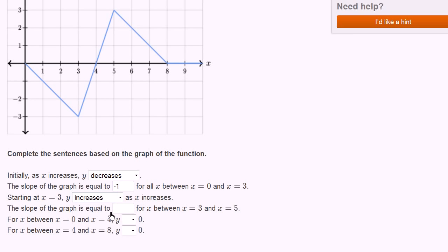The slope of the graph is equal to blank for x between 3 and 5. So when x increases by 1, y is increasing by 3. Change in y is 3, change in x is 1. Slope is change in y over change in x, which is 3 over 1. So the slope here is 3. Every time x increases by 1, y increases by 3.